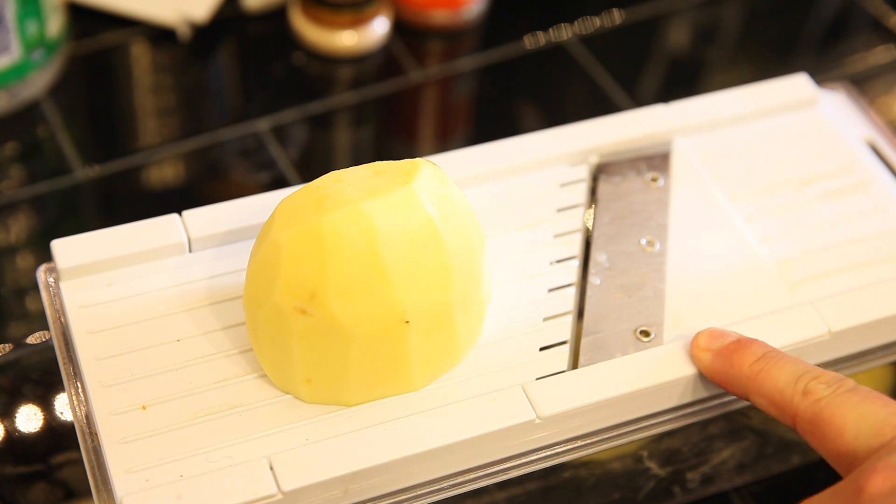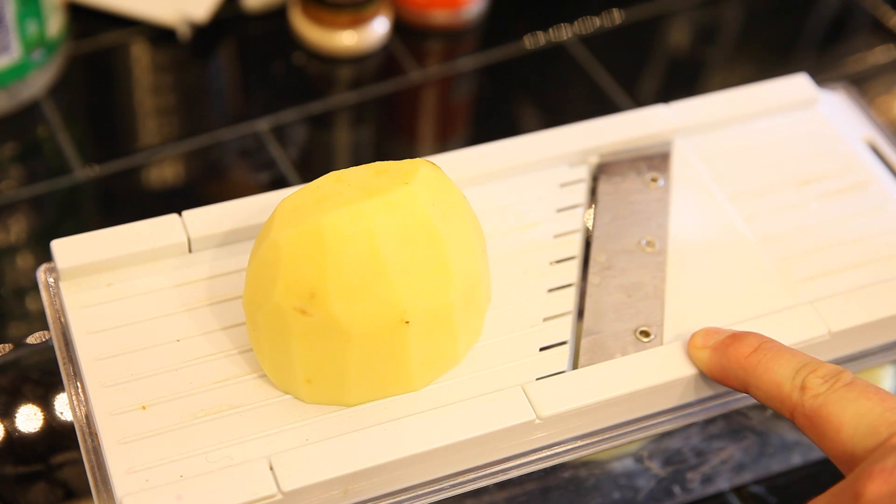And we're going to take a mandolin. Be careful when you're using mandolin, they're very sharp. Use it as thin as possible because I like really thin chips. If you want kettle you can go a little thicker. I like the size of a dime.